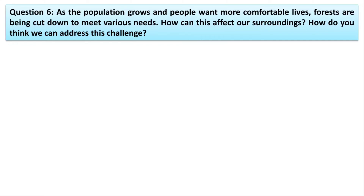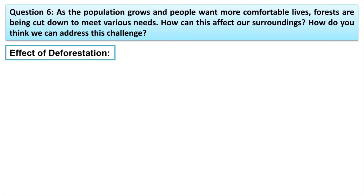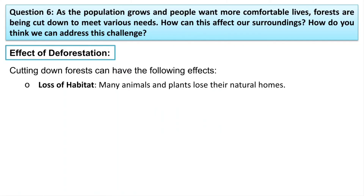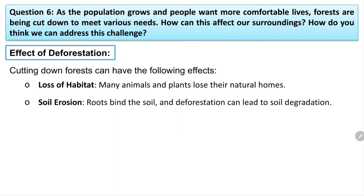Next question: as the population grows and forests are being cut down to meet various needs, how can this affect our surroundings? Cutting down forests can have the following effects. First, loss of habitat — many animals and plants lose their natural homes. Second, soil erosion — roots bind the soil, so deforestation can lead to soil degradation. If you practice deforestation again and again, the nutrients will not be present in that soil and it will become completely less nutritive.